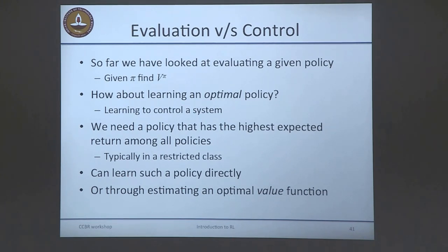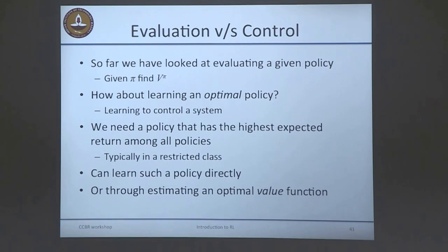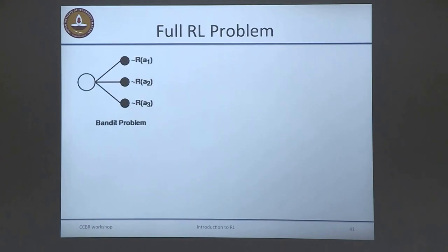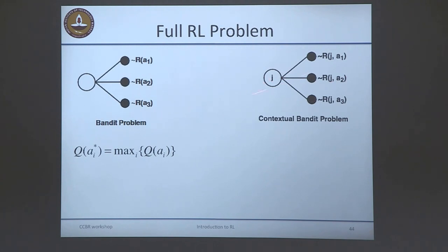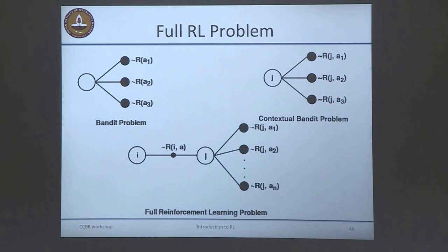The goal of the control problem is to find a policy with the highest expected return among all policies you can consider. You can learn the policy directly — that's what the direct actor approach is about. But I'm going to talk about learning through an optimal value function. Building from bandit problems: a bandit had three decisions and solving it meant finding the action with highest expected reward. The contextual bandit had some state J, and solving meant picking the action with highest expected value in that state. Now in the full RL problem, you're in state I, take an action, end up in state J, and from J you have a contextual bandit problem.